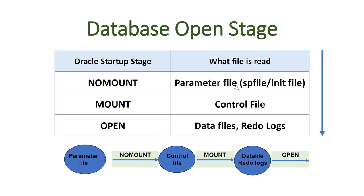The database open stages work like this: first it reads the parameter file and goes into no-mount mode, then it reads the control file and goes into mount mode, and then it opens the data files and redo logs and goes into open mode. Oracle database always goes through all of these stages in sequence — no-mount, then mount, then open.